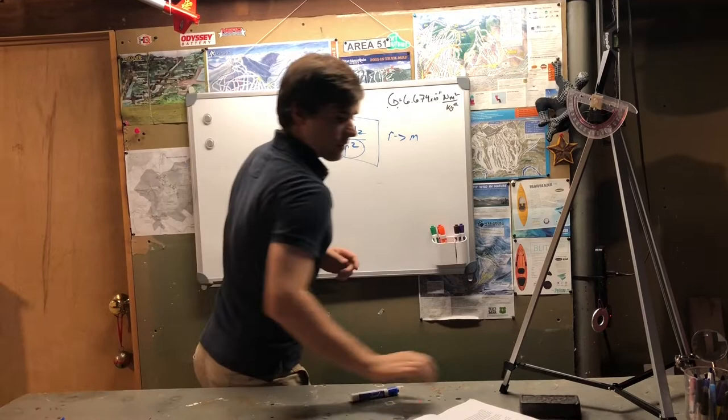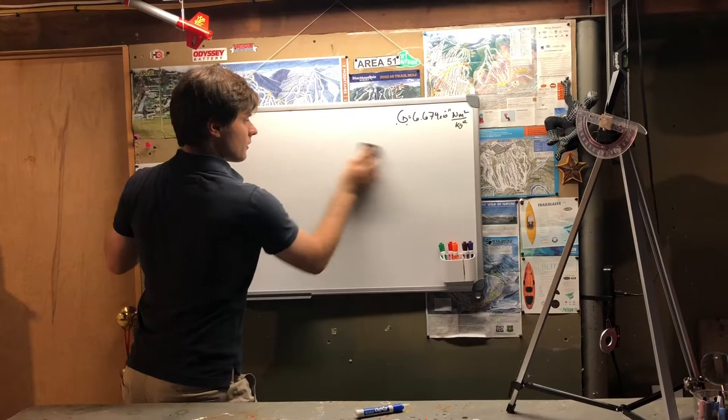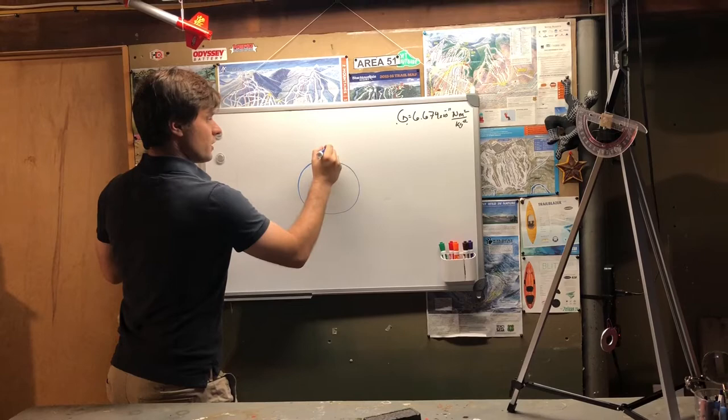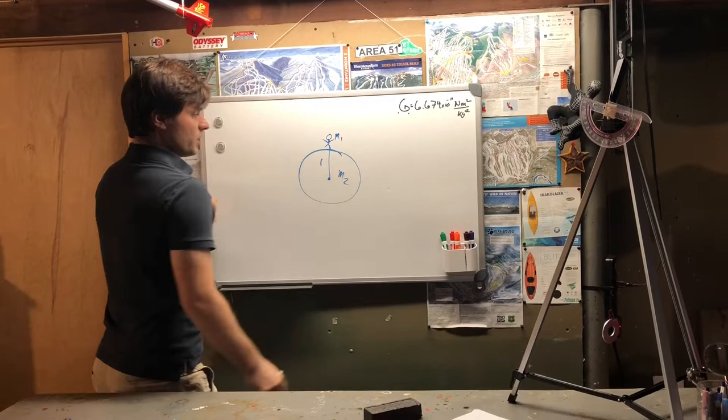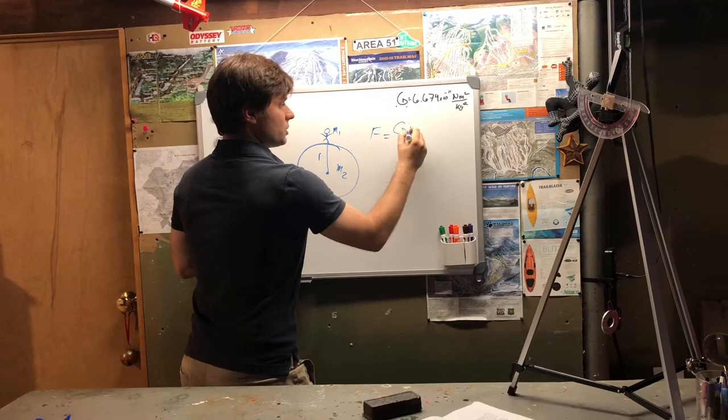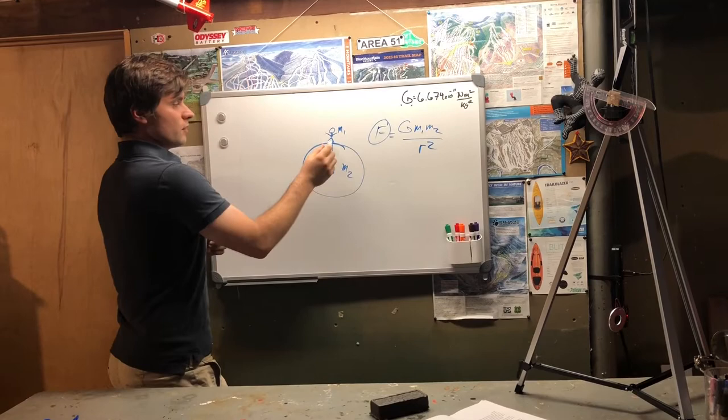So for instance, as an example, let's say you had the Earth, and you were standing on top of the Earth. Your mass would be M1, the mass of the Earth would be M2. The distance between you guys, or yourself and the Earth, would be the radius of the Earth. And you would just plug all that in, plug the G in, and you would get the force between yourself and the Earth.